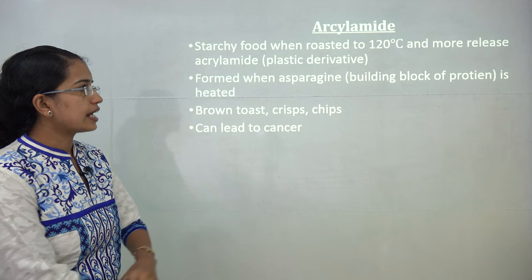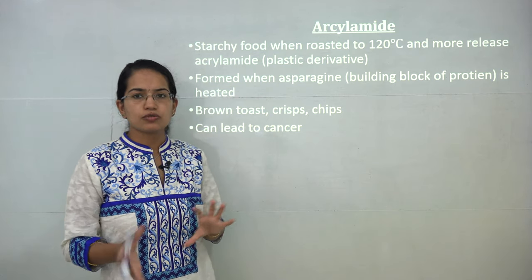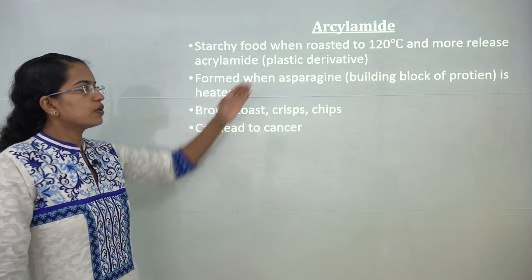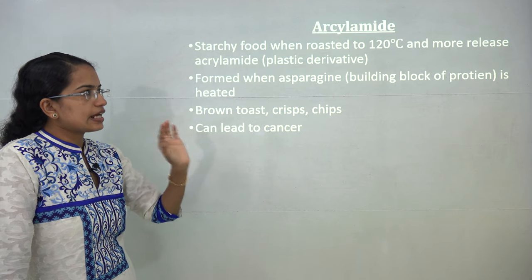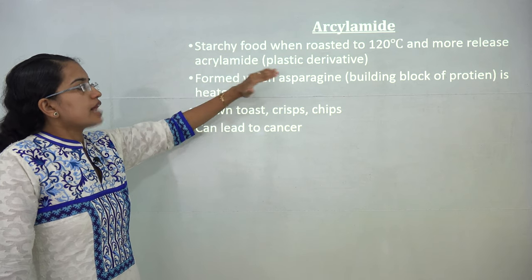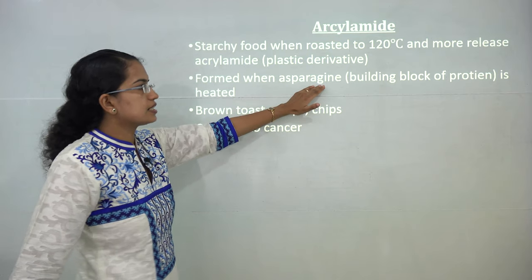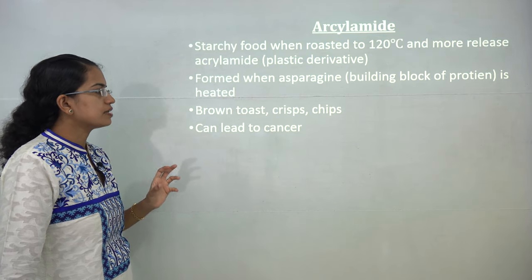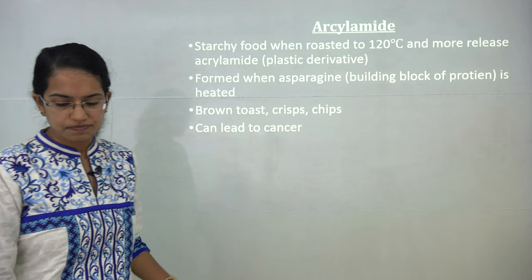Acrylamide is a harmful substance released when foods like brown bread, toast, and chips are roasted at temperatures above 120 degrees Celsius. At that temperature, asparagine — a building block of protein — is heated to form acrylamide, a plastic derivative considered very harmful and potentially carcinogenic.